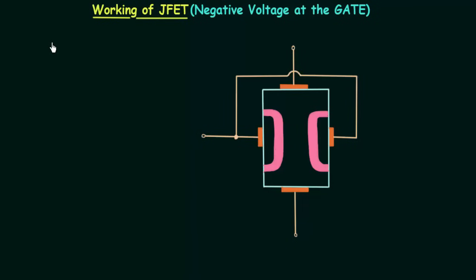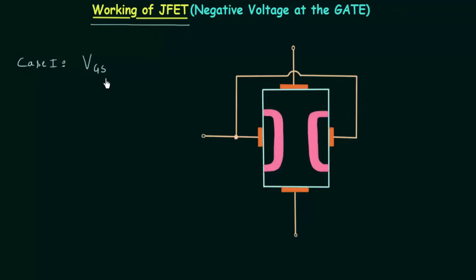In the beginning I told you we will discuss two cases in the working of JFET, and in this lecture we will discuss case number two. We have already completed case number one — if you missed it, you will find the link in the description. In case number one, VGS gate-to-source voltage was equal to zero volts and VDS drain-to-source voltage was equal to VDD, where VDD is some positive voltage.